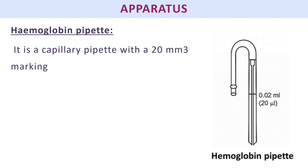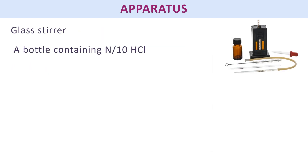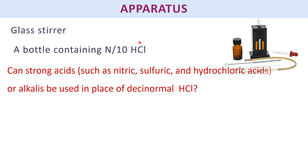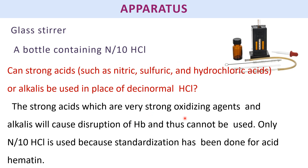Finally, there is the glass stirrer and a bottle of N/10 HCl. An important question: why must N/10 HCl be used — can strong acids like nitric acid or sulfuric acid be used instead? The answer is no: strong acids are oxidizing agents that can disrupt hemoglobin. N/10 HCl is used because the standardization is also done using N/10 HCl to produce acid hematin.